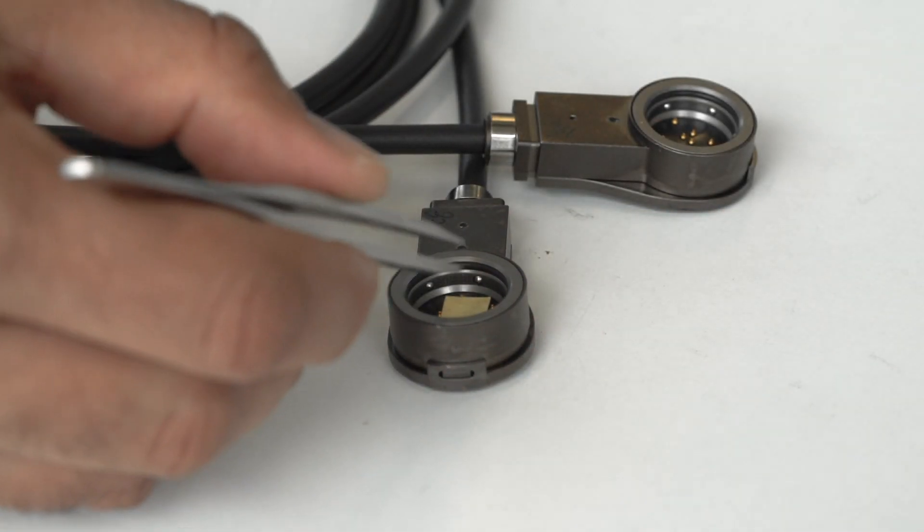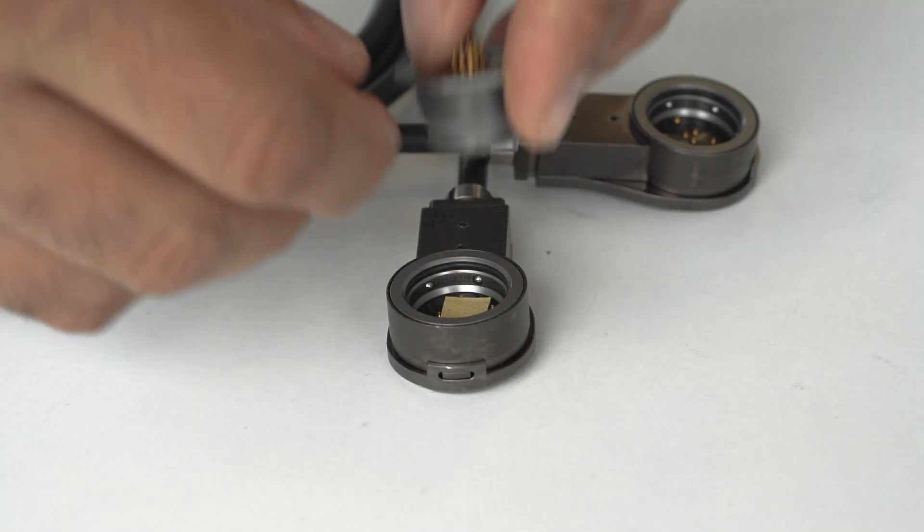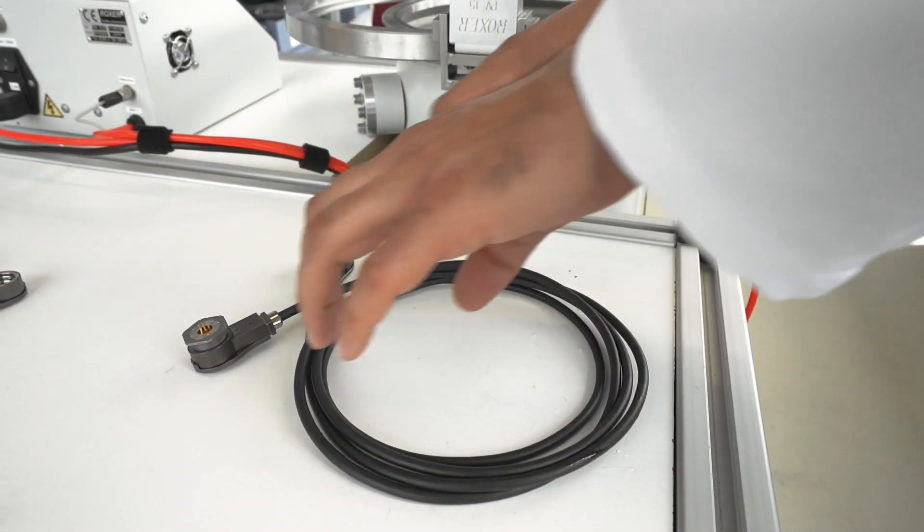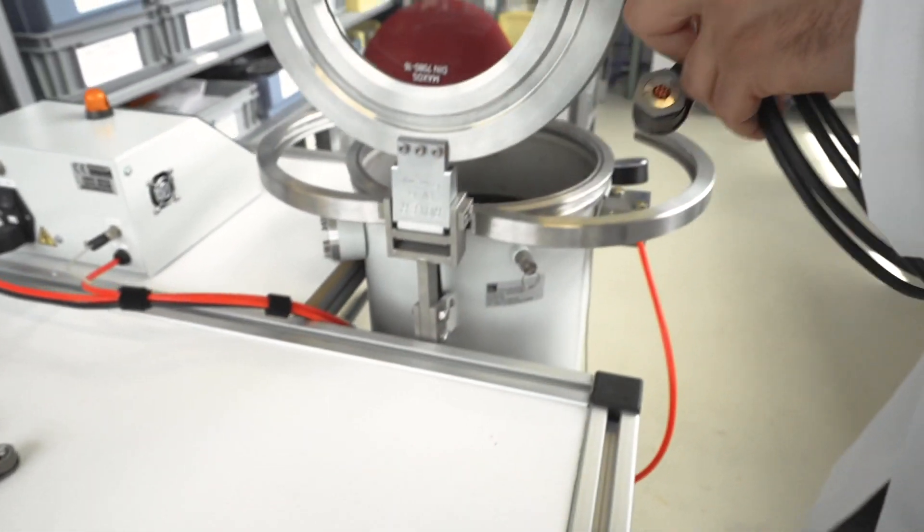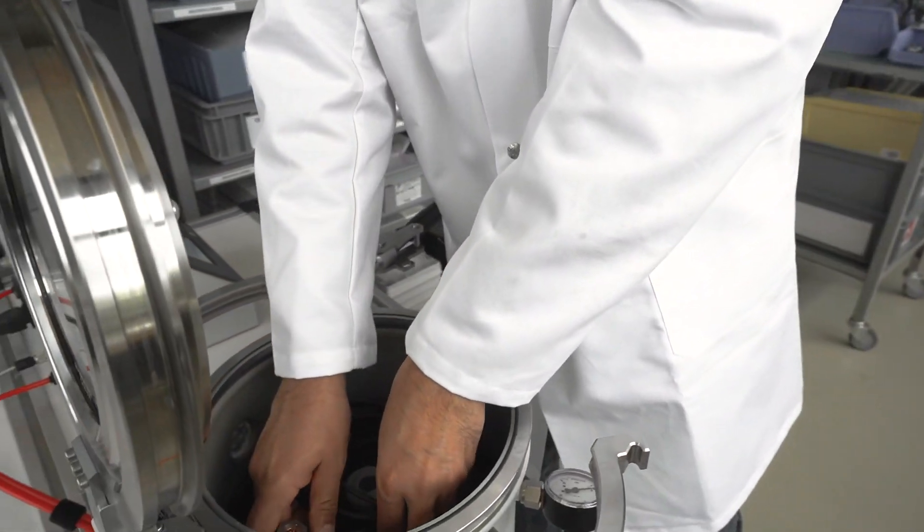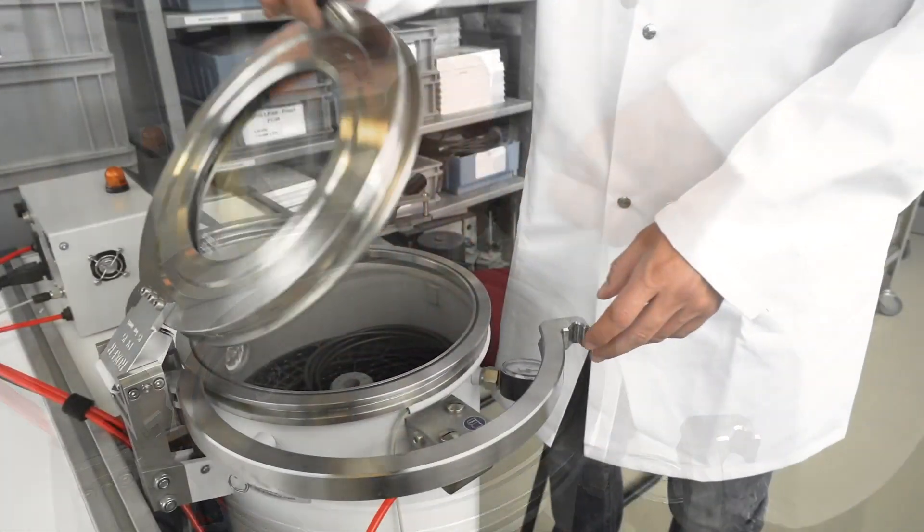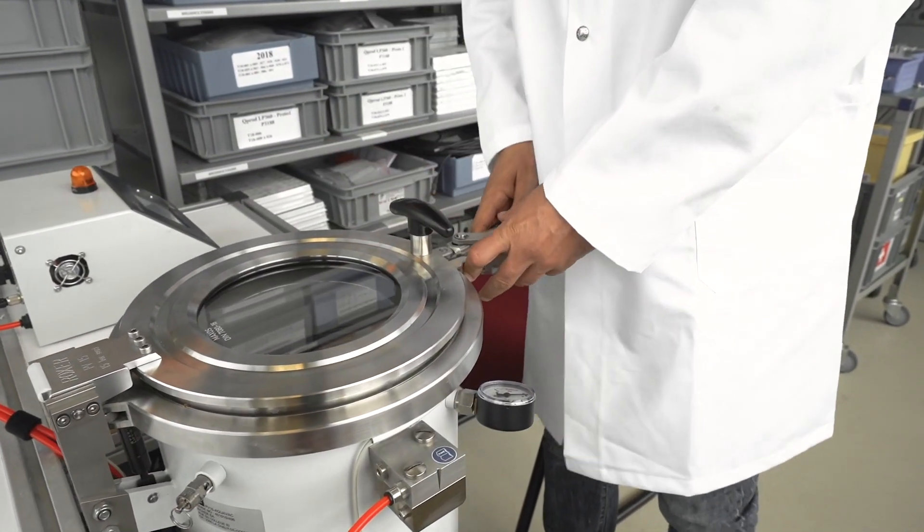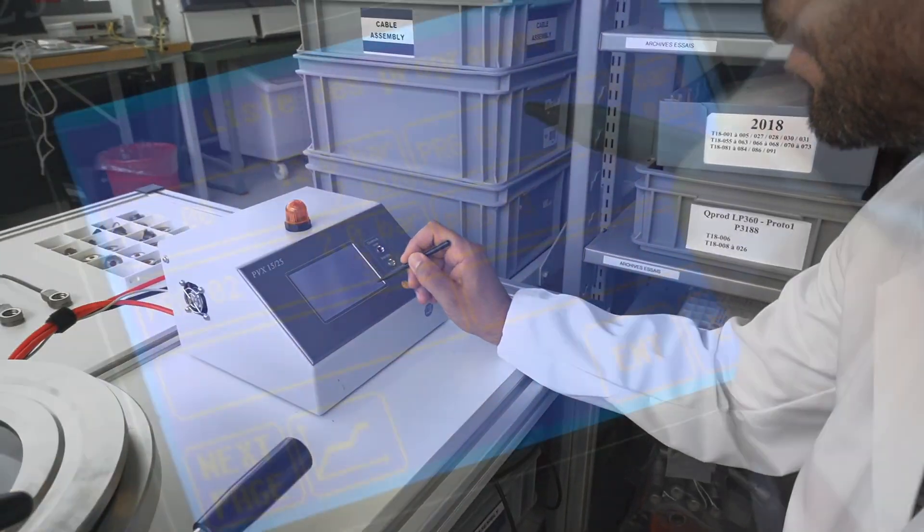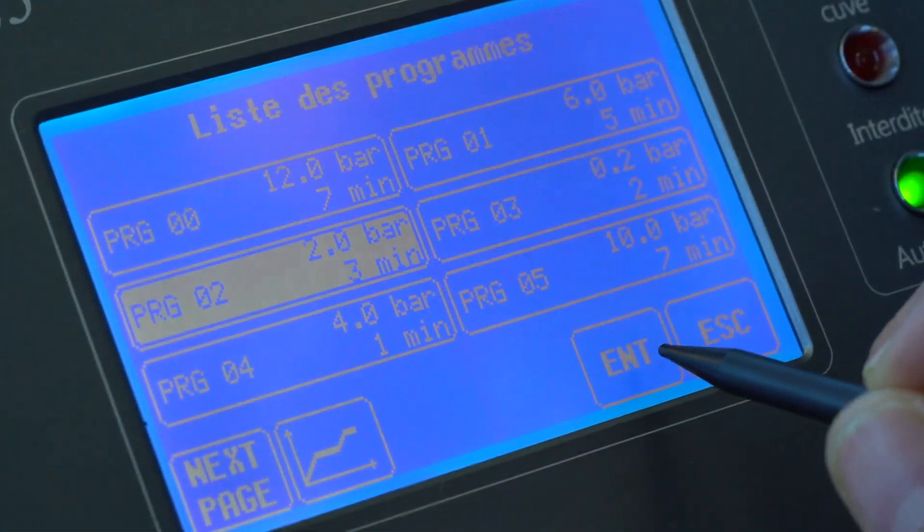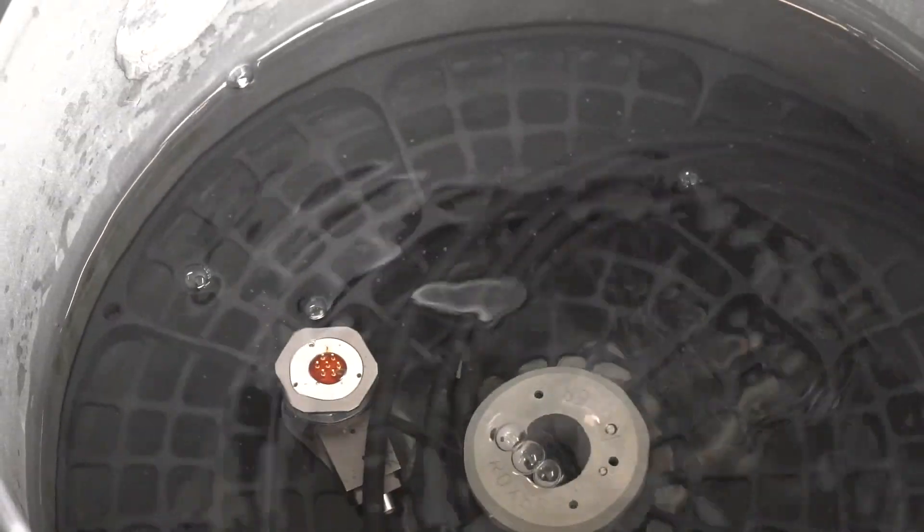Due to its sealing performance, the Fischer Freedom Series is the ideal connectivity solution for extreme environments. A small pH indicator paper is placed between the plug and receptacle. The connectors are unmated and then immersed in water inside a pressure vessel at two bars, which corresponds to an immersion depth of 20 meters.